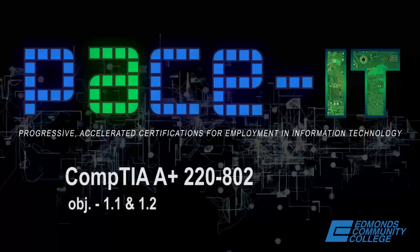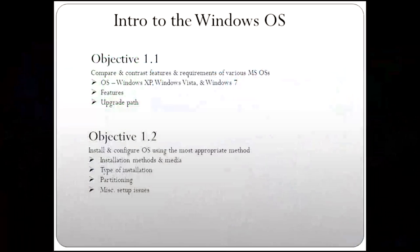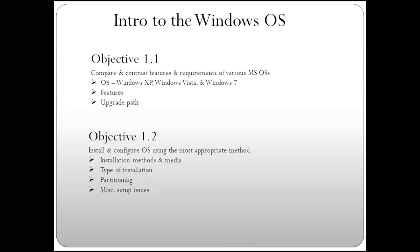Tonight's topic for CIS 205 is CompTIA's A-plus Exam 220-802, that's the second exam, and we'll be covering exam objectives 1.1 and 1.2. We're going to start with operating systems, then common features, and upgrade paths for objective 1.1. Under objective 1.2, installing and configuring operating systems using the most appropriate method, we'll cover installation methods and media, different types of installation, partitioning hard drives, and miscellaneous setup issues.